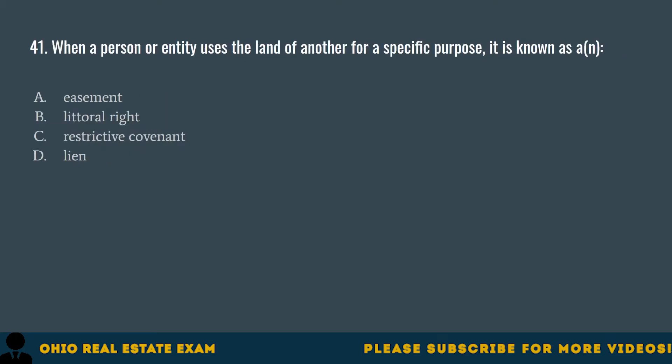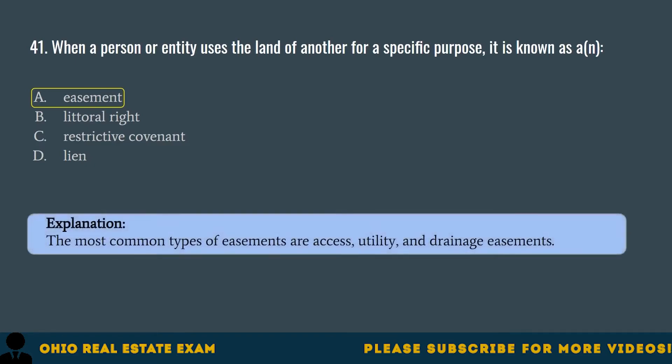Question 41. When a person or entity uses the land of another for a specific purpose, it is known as an... A. Easement. B. Literal right. C. Restrictive covenant. D. Lean. The correct answer is A. Easement. The most common types of easements are access, utility, and drainage easements.